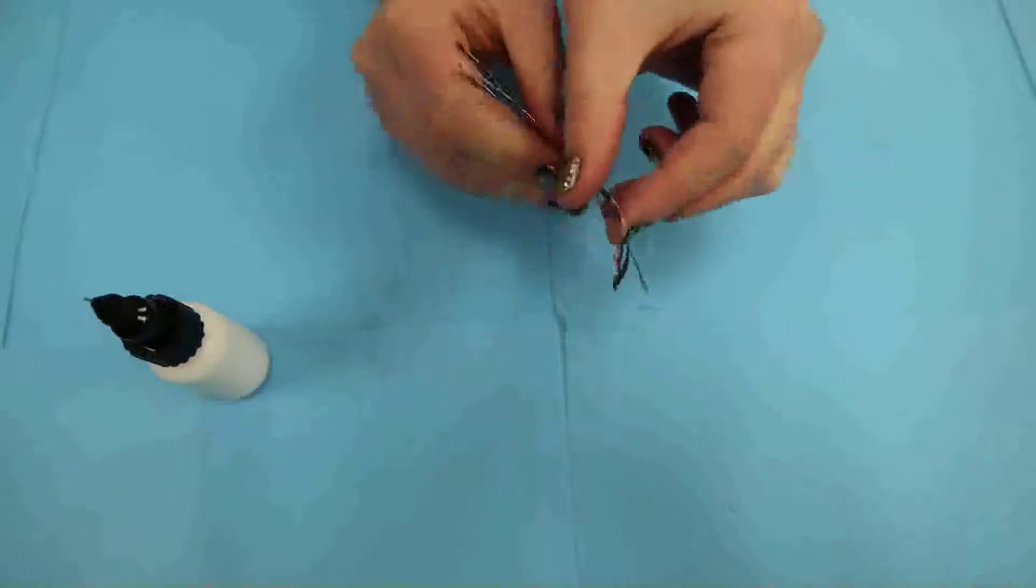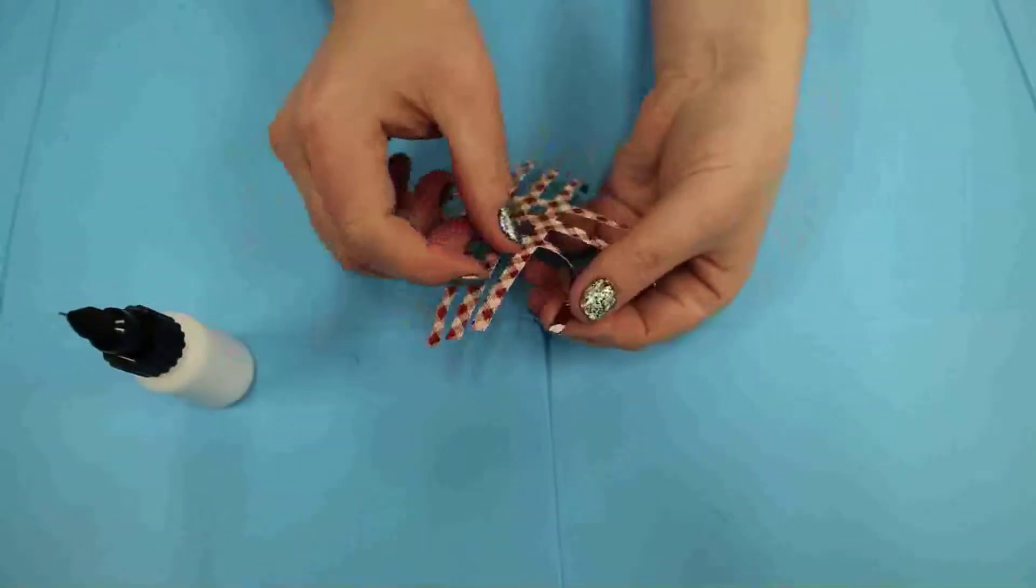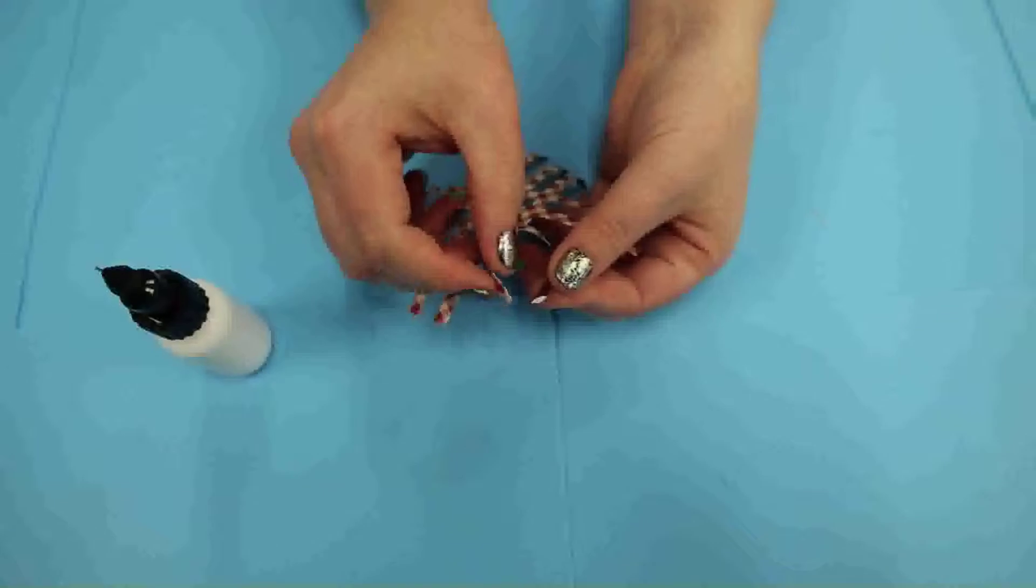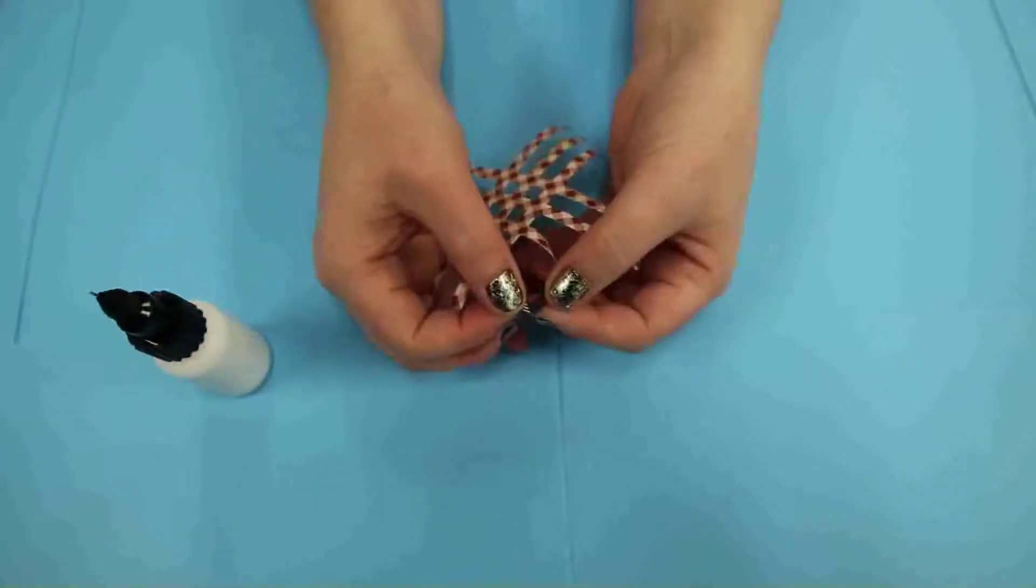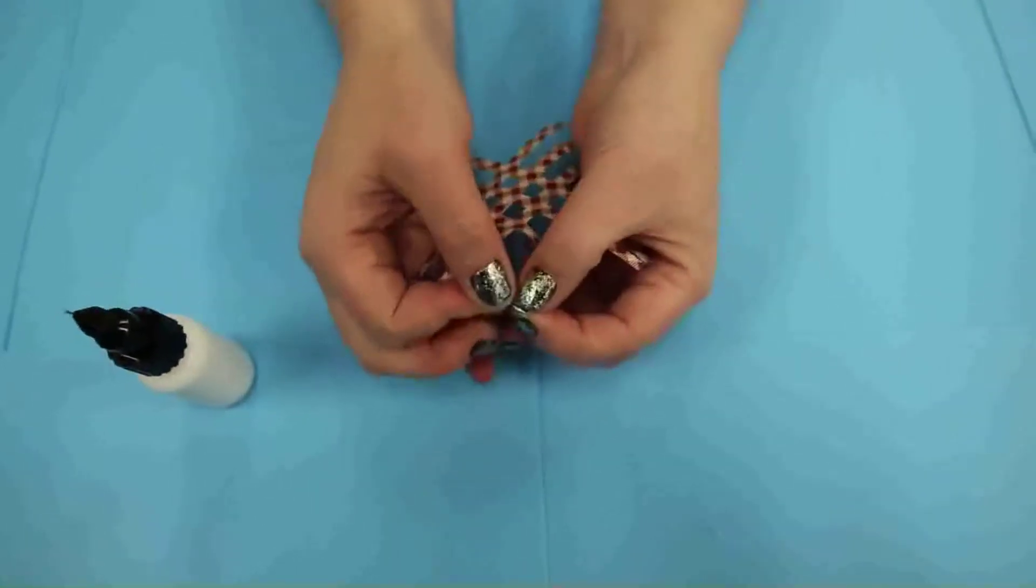Now this is the trick. You're going to take it and you're going to turn so that you actually see the back side and you're going to turn this one and they're going to join. Just like that. You're going to hold it for a second.